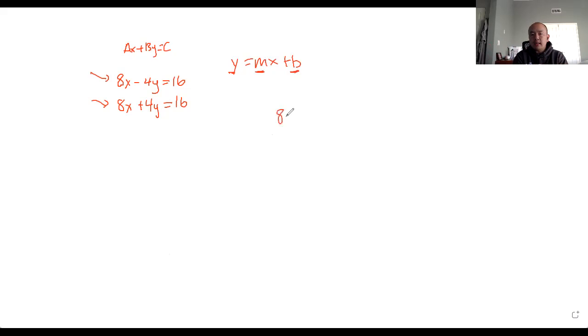So if we do this 8x minus 4y equals 16, you subtract the 8x to both sides. So it's negative 4y equals negative 8x plus 16. And you divide by negative 4. And so y equals 2x minus 4. Now I think this was from block 2. But remember, what is the y-intercept? What is the slope?